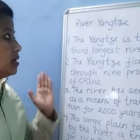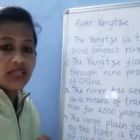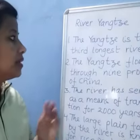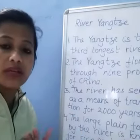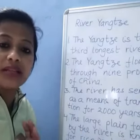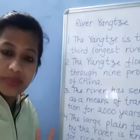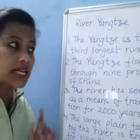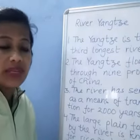River Yangtze — where does it flow? It flows in China. The Yangtze is the third longest river. The Nile is the longest river, the Amazon is the second longest, and the third longest is river Yangtze.